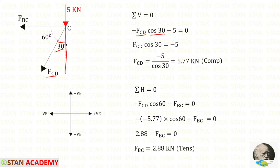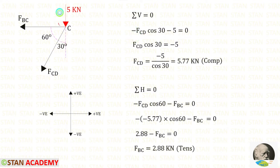When we make FCD vertical it will be acting downwards, so FCD should be applied as negative. The 5 kN load is also acting downwards, so it is also negative. Finally for FCD we will get a negative value, which means it is compressive.